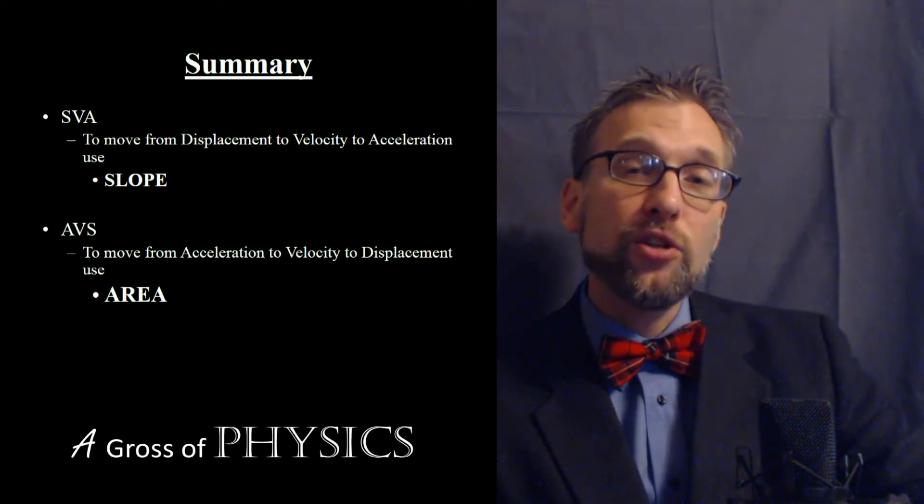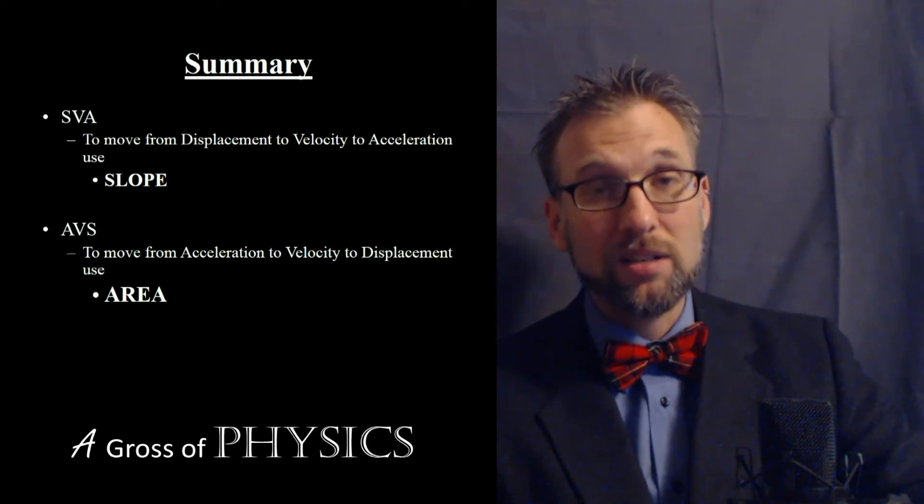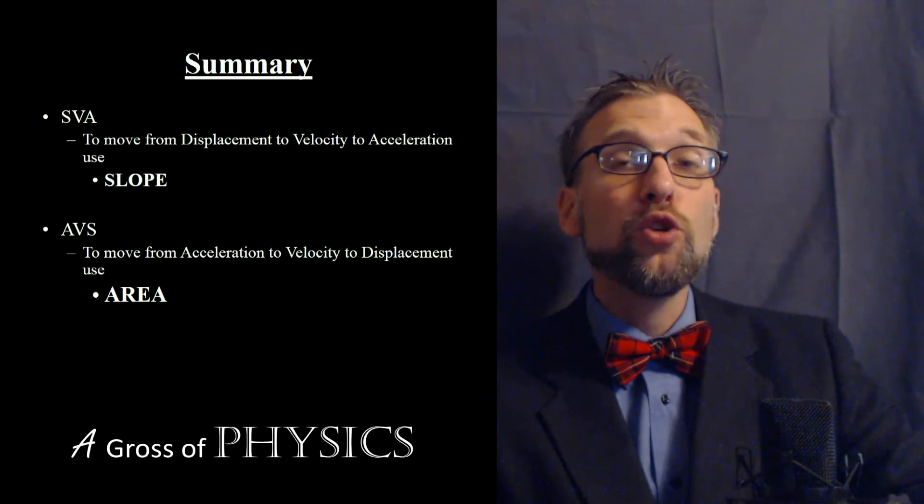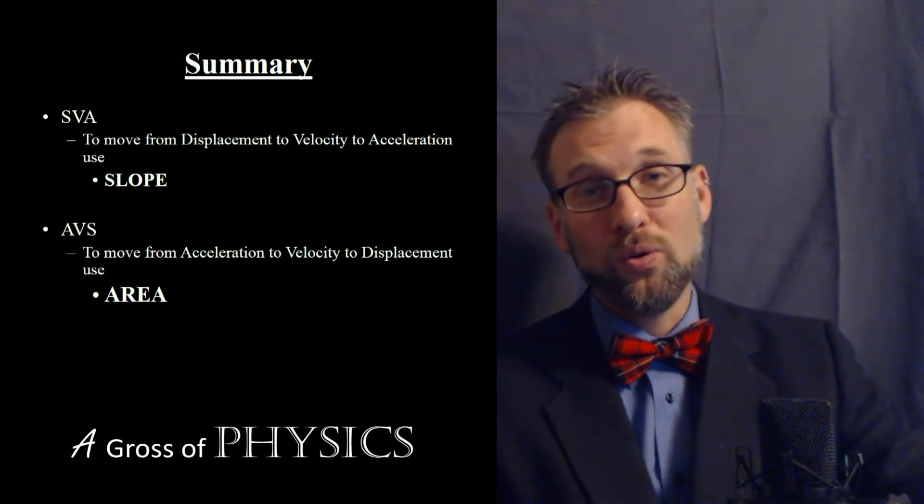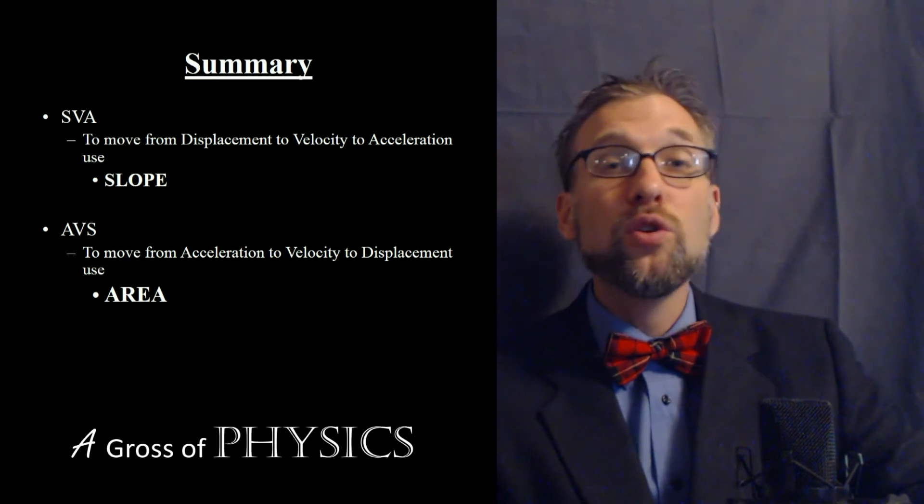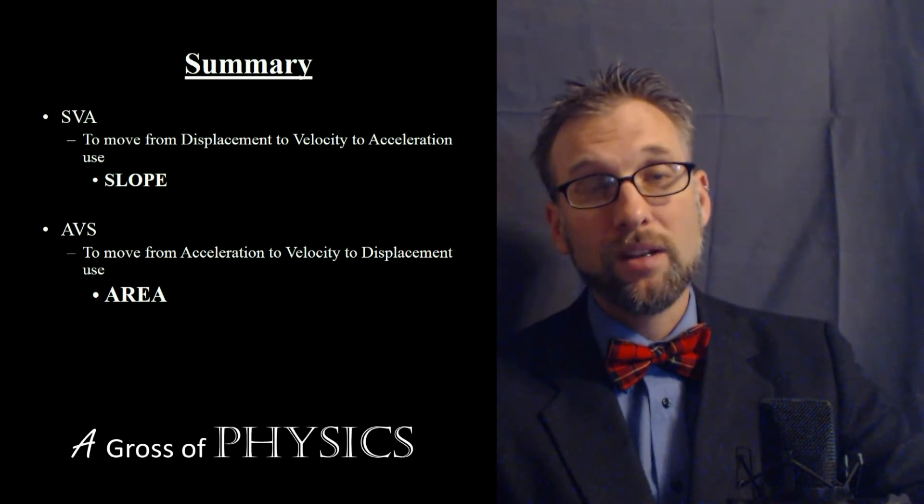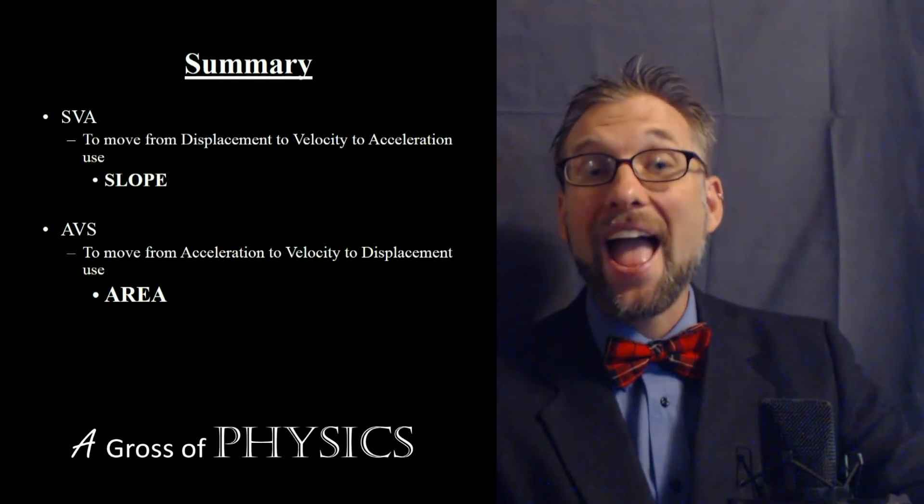In order to move down the chart, from S to V to A, or S being displacement, to velocity to acceleration, you use the S tool, which is slope. So SVA starts with S, so you use the slope to go from displacement to velocity to acceleration. On the other hand, to go AVS back up you do the area.